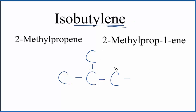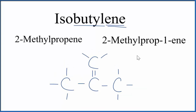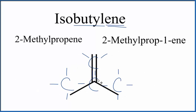Each carbon will have four bonds. So this would be the structural formula for isobutylene, also called 2-methylpropene or 2-methylprop-1-ene. You could also write this in a condensed form where we don't write the hydrogens, and we have a carbon here, here, here, and here. That's one way to do it.